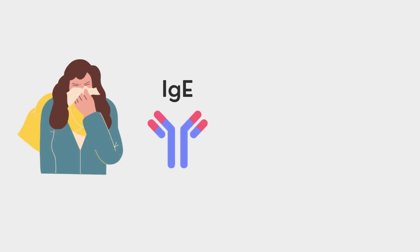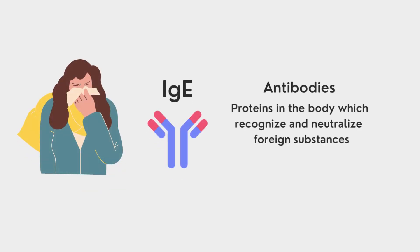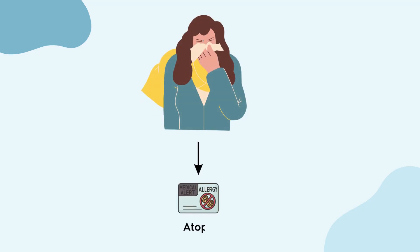Allergic responses are mediated by IgE, a type of antibody involved in allergic or atopic reactions. Antibodies are proteins in the body which recognize and neutralize foreign substances. Allergic responses mediated by IgE are the most common inducers of AHR, and the majority of asthmatic patients are atopic, meaning they are sensitive to these foreign substances known as allergens.